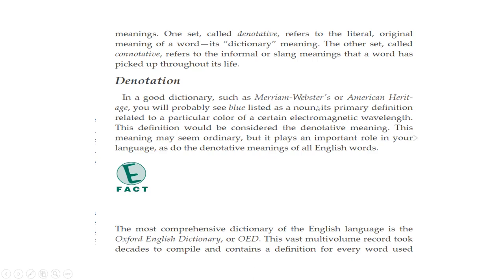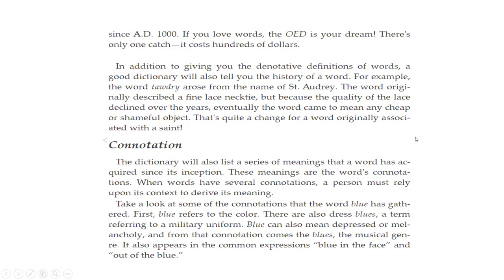Denotation: in a good dictionary, such as Merriam-Webster's or American Heritage, you will probably see 'blue' listed as a noun, with its primary definition related to a particular color of a certain electromagnetic wavelength — that's a lot of gobbledygook. This would be considered the denotative meaning. The most comprehensive dictionary of the English language is the Oxford English Dictionary, or OED. The vast multi-volume record took decades to compile and contains a definition for every word used since AD 1000. If you love words, the OED is your dream — there's only one catch: it costs hundreds of dollars.